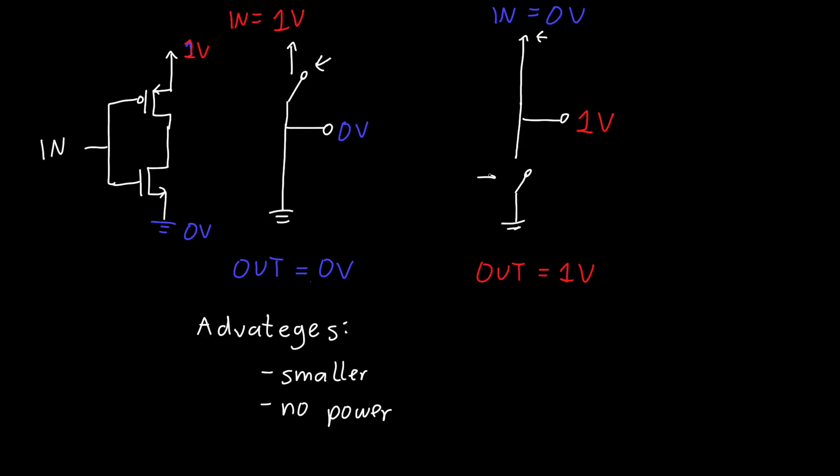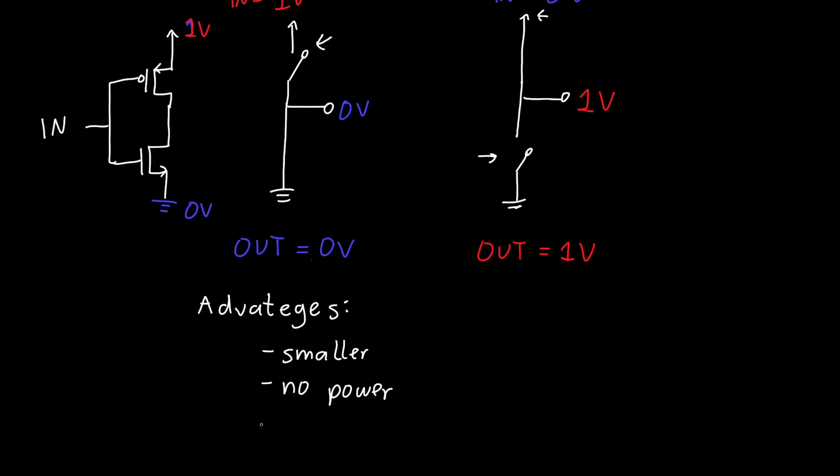And when our input is 0, when our PMOS is on and our NMOS is off, then we have no current. So this ideally consumes no power. It's also just very simple to implement. So it turns out resistors are actually quite hard to make in the context of integrated circuits. So this two-transistor NOT gate actually does a wonderful job, and it's an absolutely beautiful design.